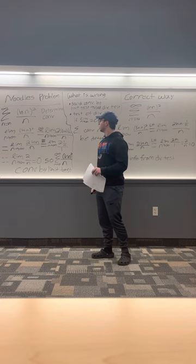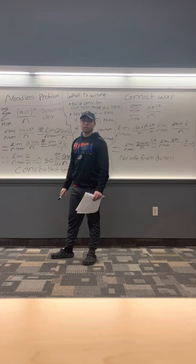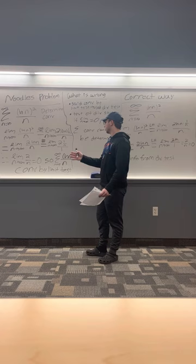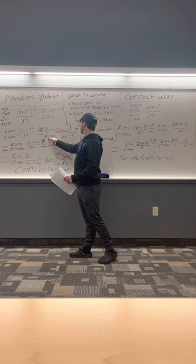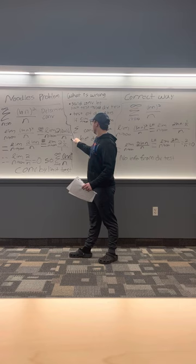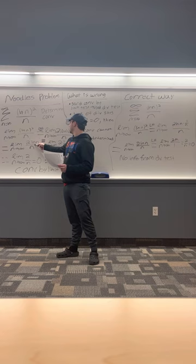Noodle the Pug converted it to a limit as n approaches infinity of natural log of n squared over n. Using L'Hôpital's rule, as indicated right here, he took the derivative, getting the limit as n goes to infinity of 2 times natural log of n times 1 over n, all over n. When simplified, this is equal to the limit as n goes to infinity of 2 times natural log of n over n.